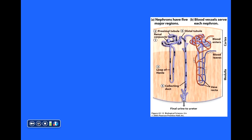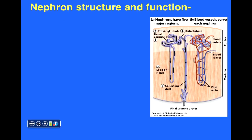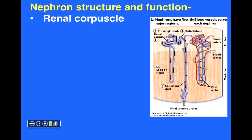The functional unit of kidneys are structures referred to as nephrons. Here we see an image illustrating two nephrons. Let's briefly point out the different regions and portions of a nephron, because as we'll see, they play different roles during the formation of urine.